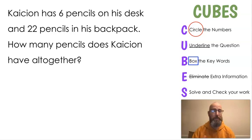Let's practice another one just with CUBE. Next, it's about Caseion. Caseion has six pencils on his desk and 22 pencils in his backpack. How many pencils does Caseion have all together? Now remember, step one is C. What does C stand for? Circle the numbers. So look for the numbers in the question. Six and 22. Those are our two numbers.